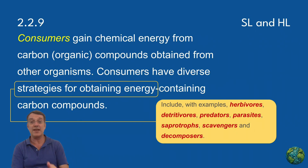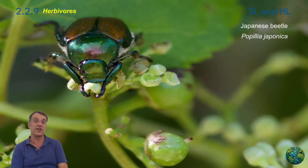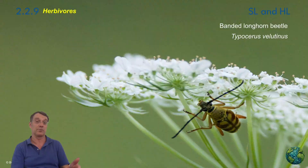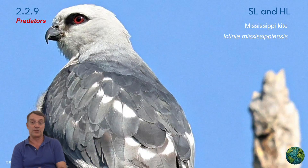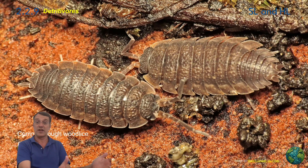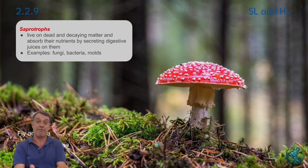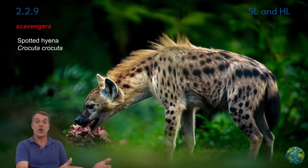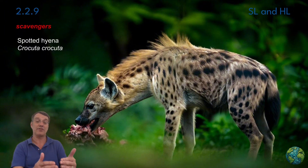Consumers obtain their energy by feeding on other organisms, and there is remarkable diversity in consumer feeding strategies. Herbivores feed directly on producers, while predators hunt other animals. Parasites extract resources from living hosts, and detritivores consume dead organic matter. Saprotrophs like fungi and certain bacteria secrete digestive enzymes to break down and absorb nutrients from dead material, and scavengers feed on organisms they haven't killed themselves.